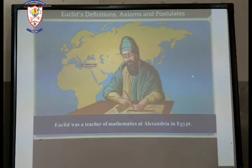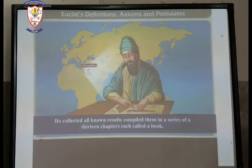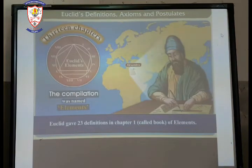Euclid was a teacher of mathematics at Alexandria in Egypt. He collected all known results, compiled them in a series of 13 chapters, each called a book. The compilation was named Elements.